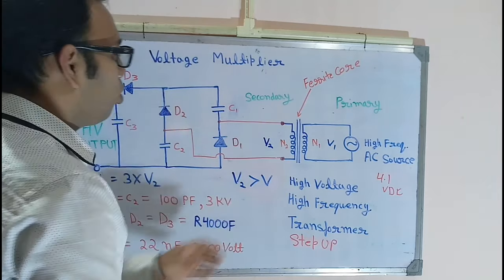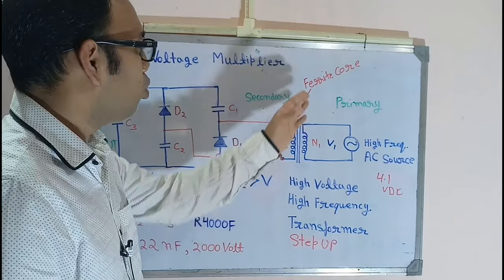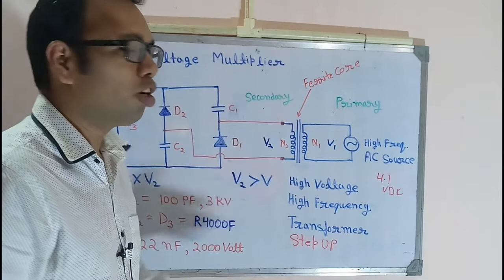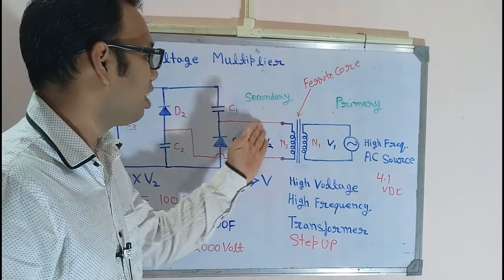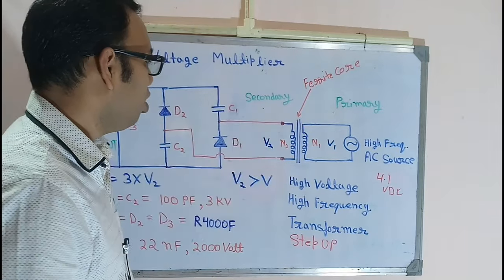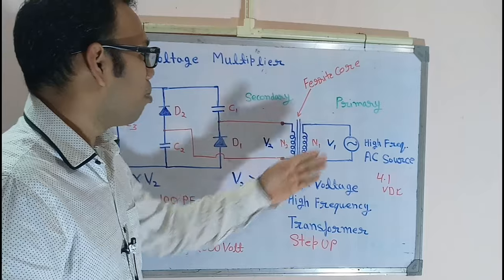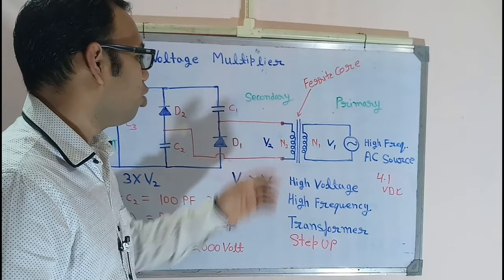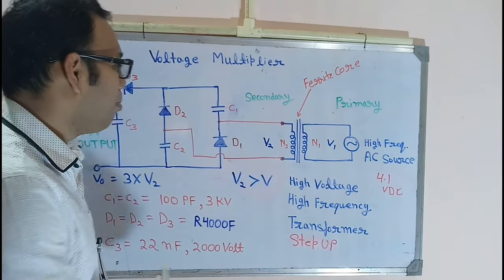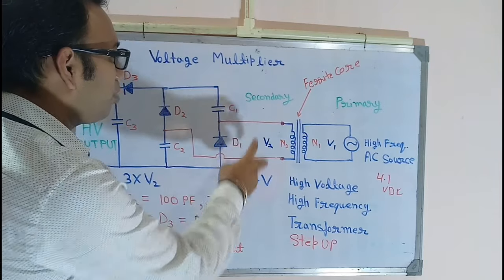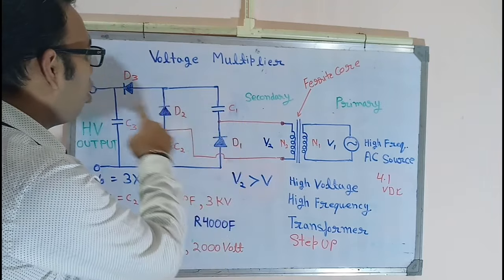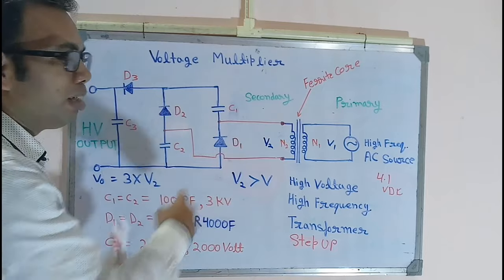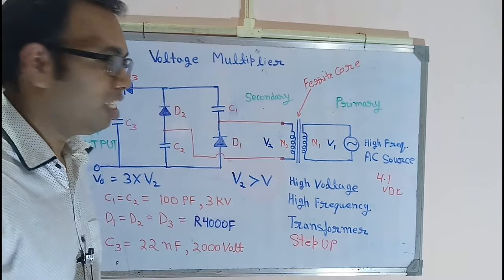This transformer is basically built on a ferrite core, which has primary turns and secondary turns. The primary winding is called N1 and the secondary is called N2. The two terminals of the N2 side are connected to the voltage multiplier.